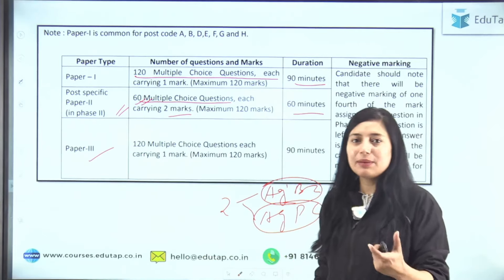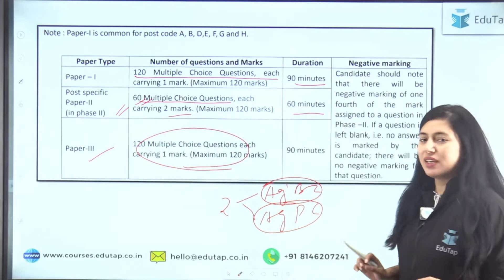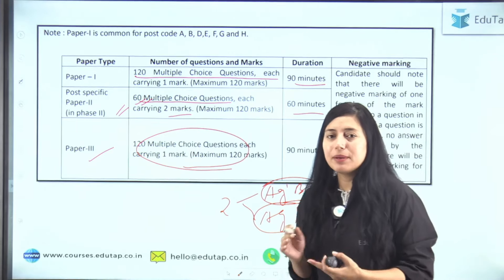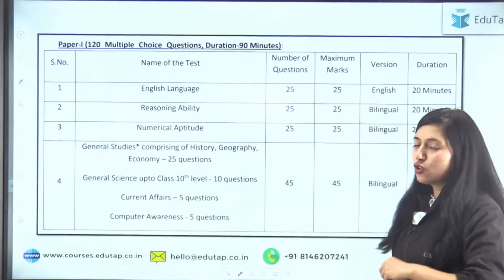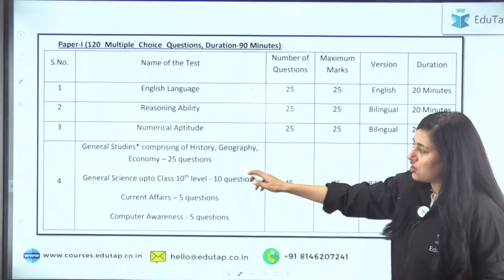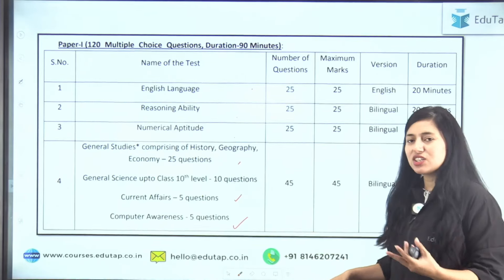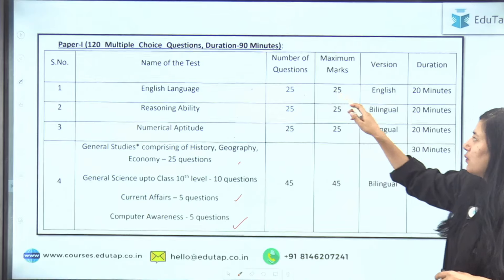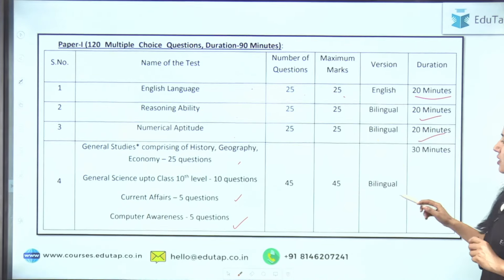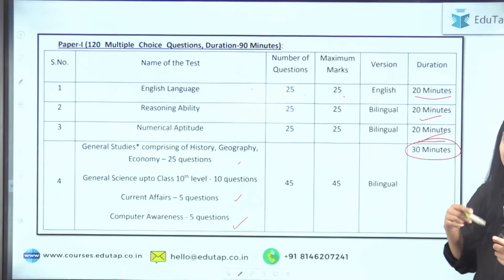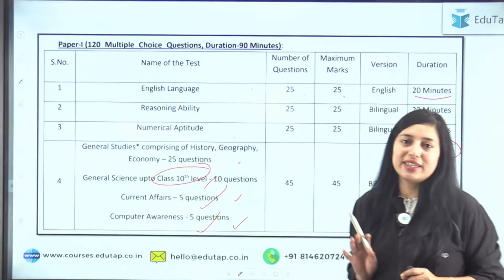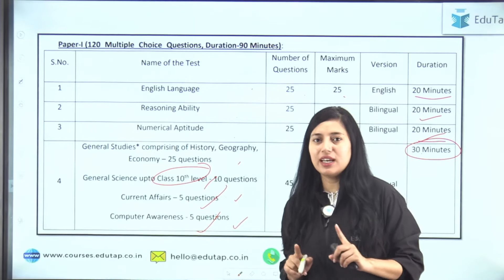Kisi kisi category mein Paper 3 bhi hota hai, toh woha pe Paper 3 bhi dena hoga. Ab Phase 2 Paper 1 ka pattern dekhte hain. Jinko Phase 2 mein Paper 1 dena hai, they will give examination from English, Reasoning, Numerical Aptitude, GS, GA, and here Computer Awareness bhi aata hai — 5 marks ke computer ke questions bhi honge. Pattern dekho: 25 questions, 25 marks, aur time duration 20 minutes milta hai. Time duration thoda badhh gaya Phase 2 mein. GA/GS ke liye time 30 minutes hai kyunki computer awareness aur class 10th level ka GS bhi hai. Ye ho gaya Paper 1 ka pattern.